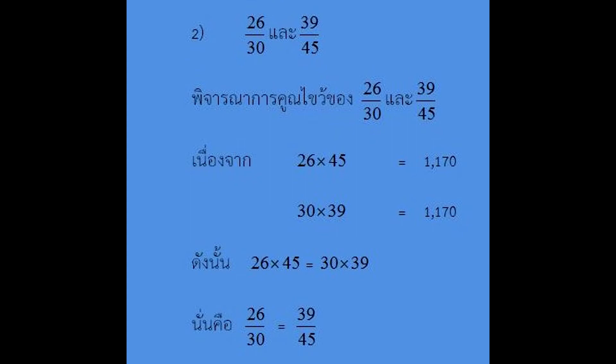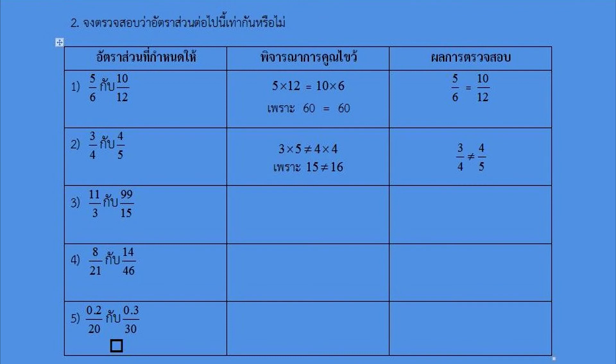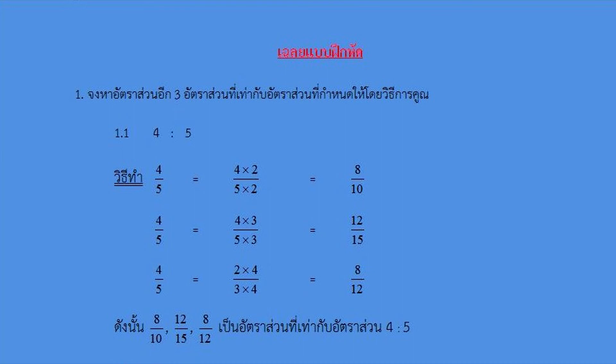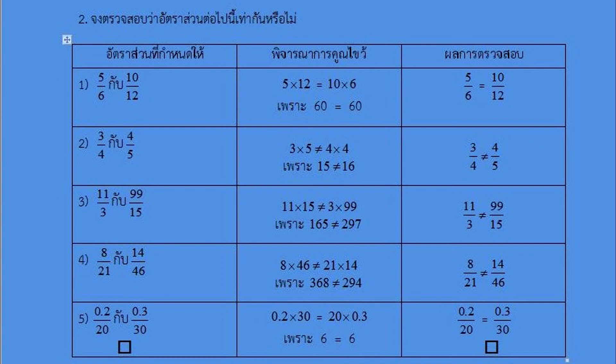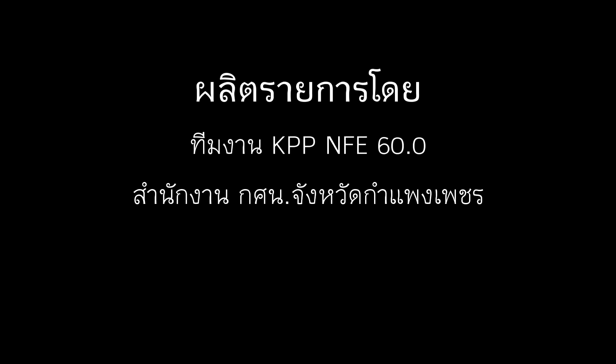นั่นคืออัตตาส่วน 26 ต่อ 30 เท่ากับอัตตาส่วน 39 ต่อ 45. สำหรับบทเรียนที่เราได้เรียนกันในครั้งนี้คือการหาอัตตาส่วนที่เท่ากันและการตรวจสอบการเท่ากันของอัตตาส่วน ให้นักศึกษาไปทำแบบฝึกหัดพร้อมกันเลยค่ะ แล้วพบกันใหม่ในคลิปการสอนคลิปหน้า สำหรับวันนี้ สวัสดีค่ะ.